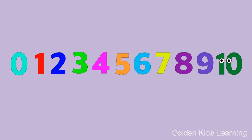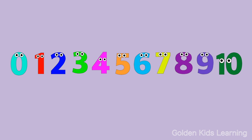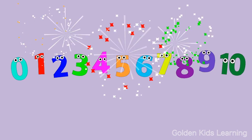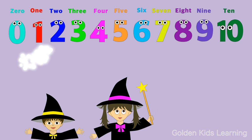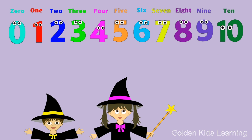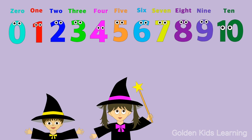Did we do that correctly? Let's make sure. Zero, one, two, three, four, five, six, seven, eight, nine, ten. So how did you do? What we did was we started with zero and increased one by one until we got to the biggest number, ten. Then, starting with ten, we decreased one by one until we got back down to the smallest number, zero. Yay!